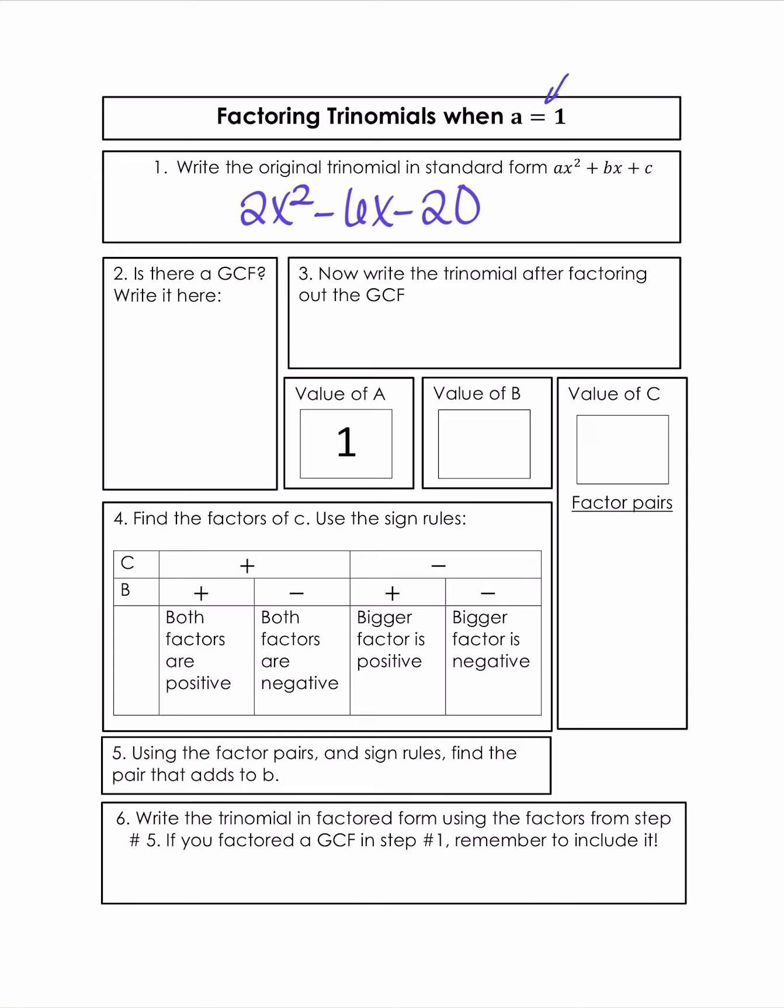So we're going to look at these three terms and see if there's a GCF. Notice that there is a GCF and it's 2. When I factor out that GCF, I'm left with x squared minus 3x minus 10. So this is in fact a trinomial where a equals 1, it's just that I had a GCF that I needed to factor out.